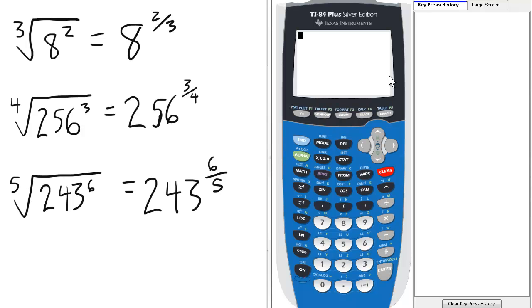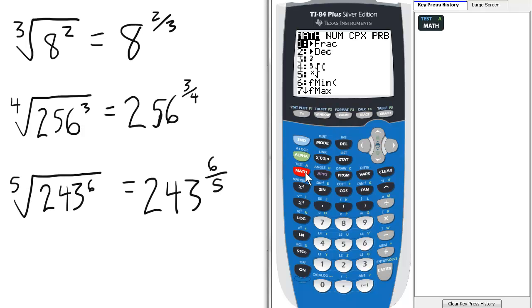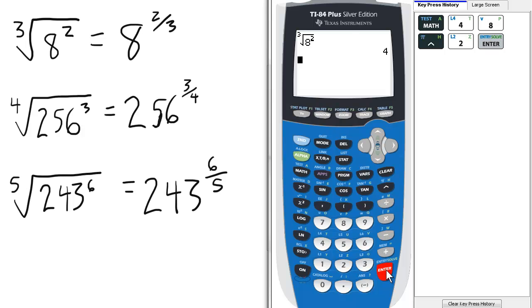The old way to find the cube root of 8 squared, we'd go to the math menu and select 4 for the cube root, and then press 8, and then raise it to the second power. So the cube root of 8 squared that way is 4.